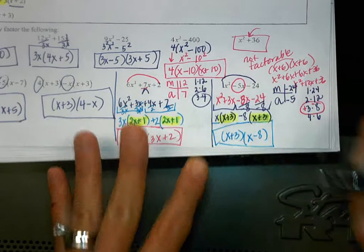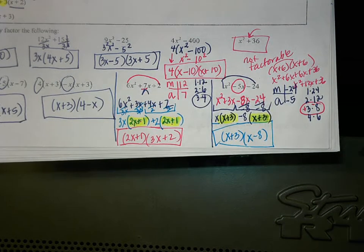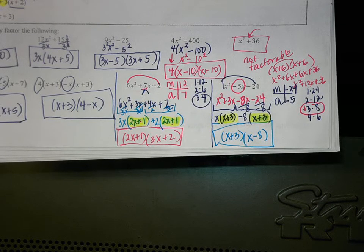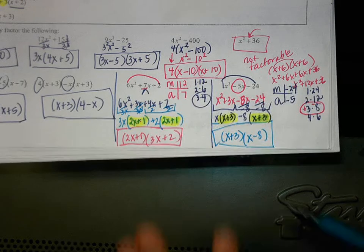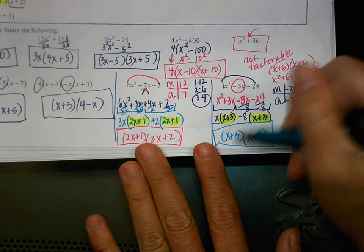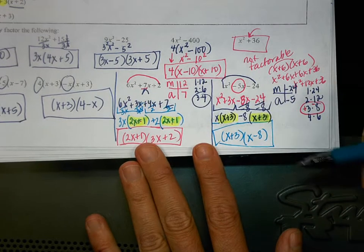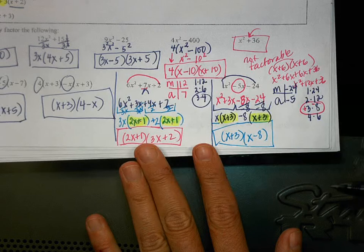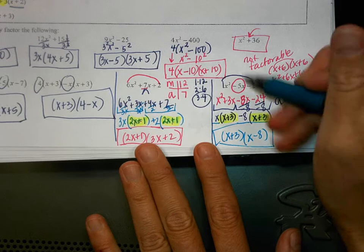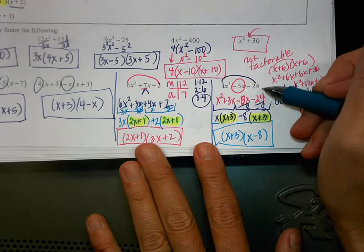And how can we double check that we're doing this correctly? You can multiply it back out — you could do your area model box thing, or you could distribute each one through — and check it to make sure it gets back to that original problem.